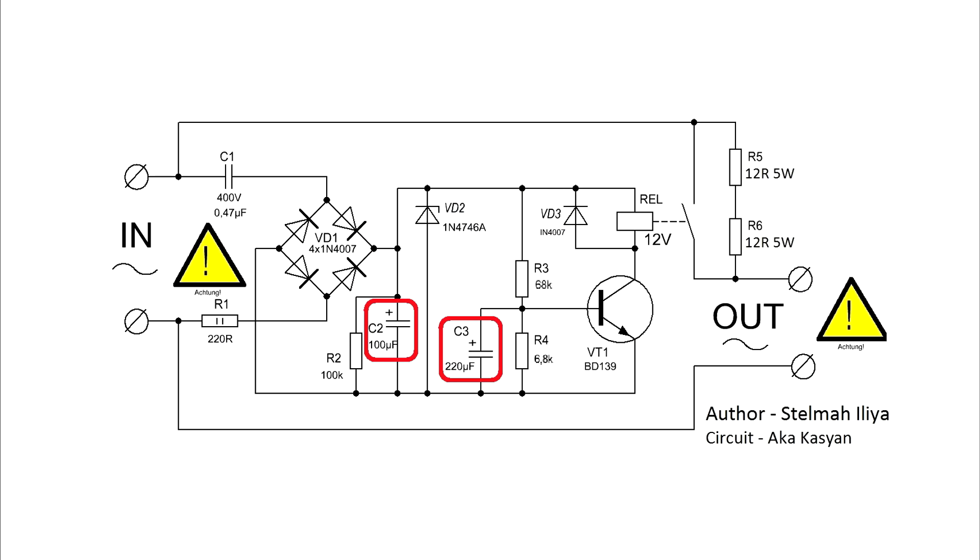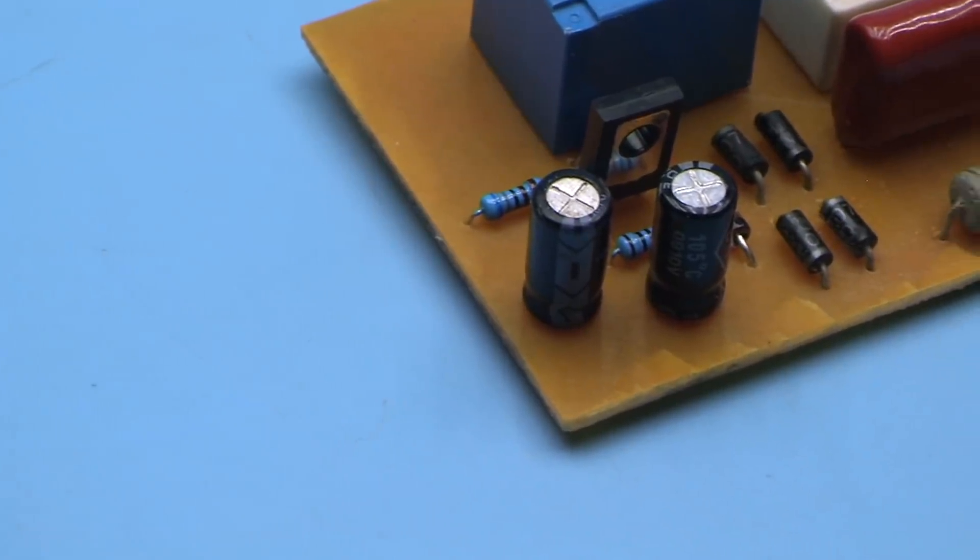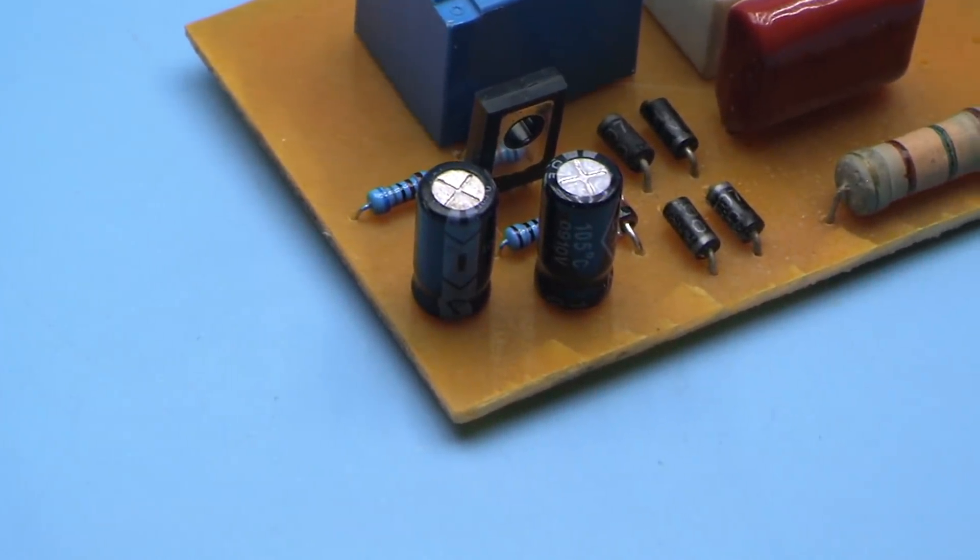Other electrolytic capacitors should have a voltage of 25 to 35 volts. Capacitor C2 is used as a powerful filter and can be from 47 to 470 microfarad. The delay time of the relay operation depends on the capacitance of C3. The larger capacitance causes the longer delay and vice versa.